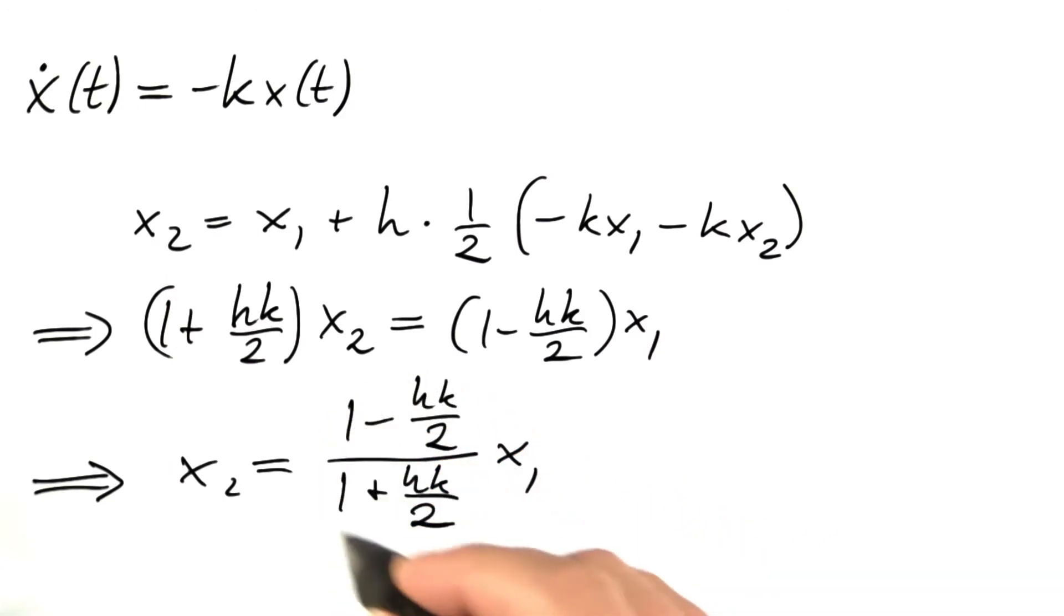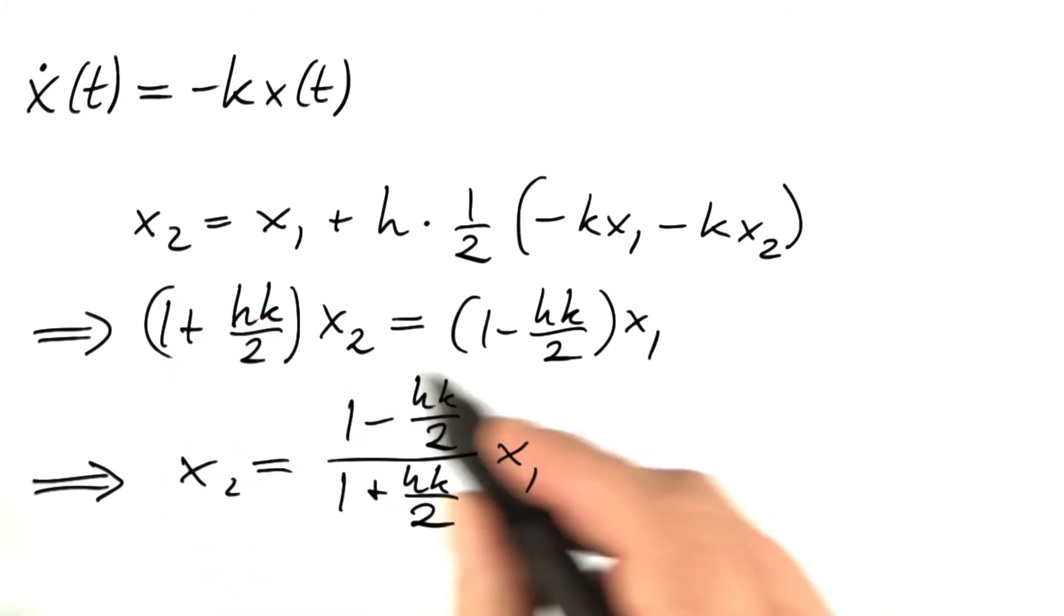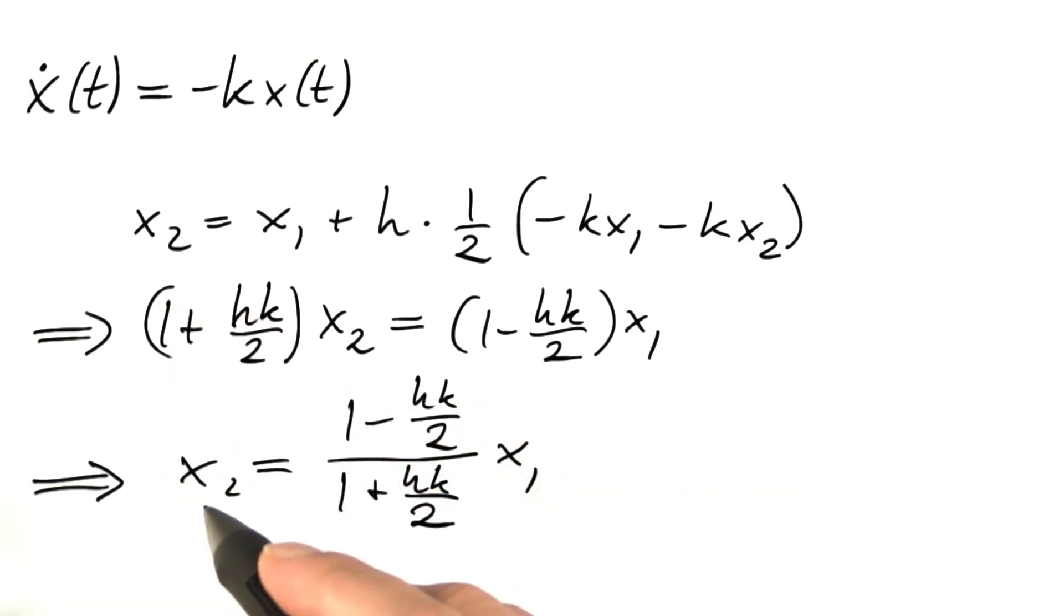If we look at what happens with the next step, we of course get a second factor of that sort. The next next step, another factor of that sort. So what happens is that we get powers of this factor. The question is what's going to happen about powers of that factor. So we see that to get from x1 to x2, we have to multiply by this factor. And this is going to occur every step.